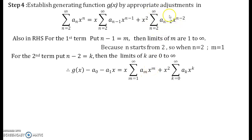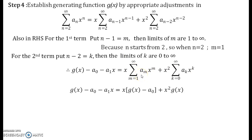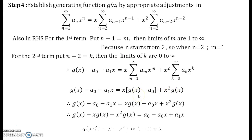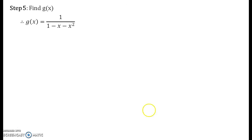For the second sum the change is k going from 0 to infinity of a_k times x to the power k. This sum from m equals 1 to infinity is g(x) minus a_0, and the second sum is exactly g(x). So solving for g(x) we obtain g(x) times (1 minus x minus x squared) equals 1, giving g(x) equals 1 upon (1 minus x minus x squared).